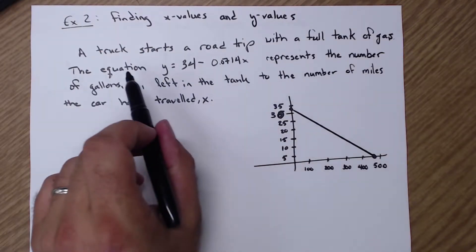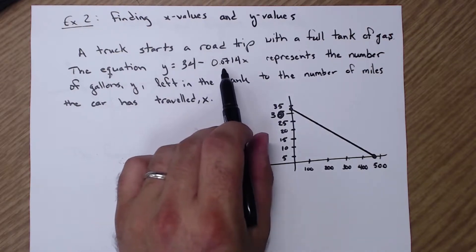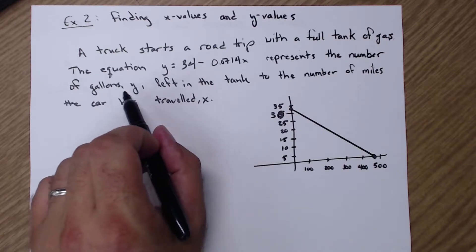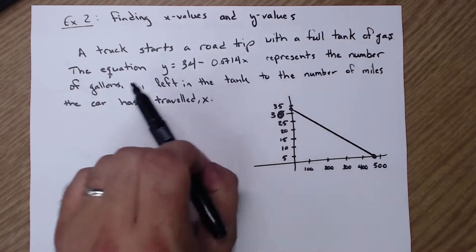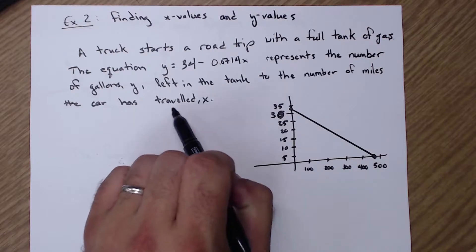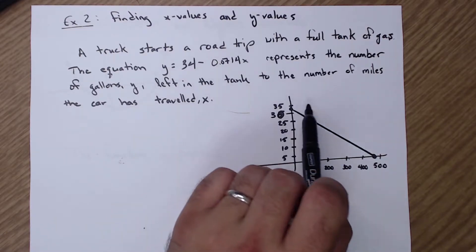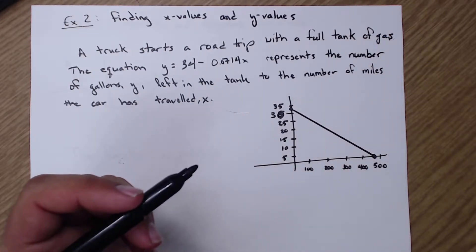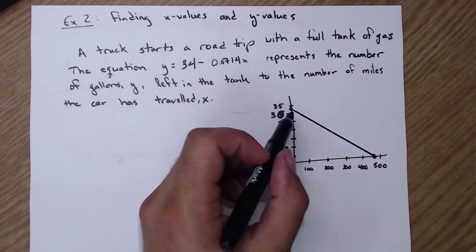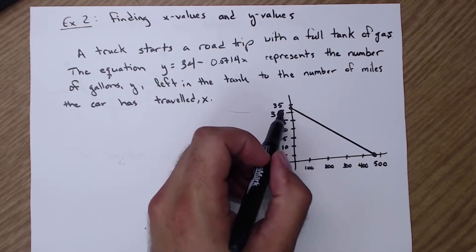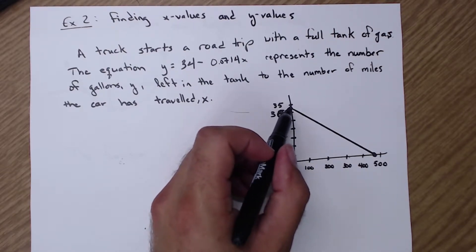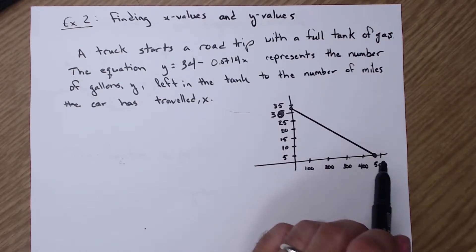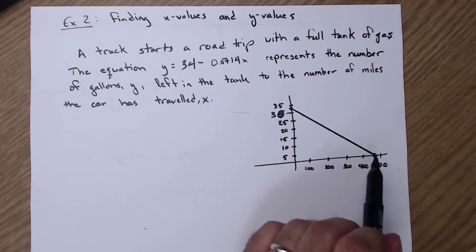A tank starts a road trip with a full tank of gas. The equation y equals 34 minus 0.0714x represents the number of gallons y left in the truck relative to the number of miles x the car has traveled, and it's represented by this graph. We need to find our x values and y values. Looking at the graph, it's between 30 and 35 on one side, and between 400 and 500 on the other — that one's a little harder to pick out — so let's use our formula.